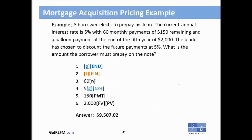Mortgage prepayment example: a borrower prepays a loan with a 5% annual interest rate, 60 monthly payments of $150 remaining, and a balloon payment of $2,000 at the end of year five. The lender discounts future payments at 5%. What must the borrower prepay? Press G-END, F-FIN; enter 60, N; enter 5, G/12÷; enter 150, PMT; enter 2000, FV; then press PV. This gives the amount the borrower must pay today to prepay the loan in full.